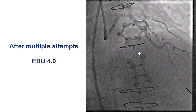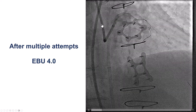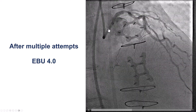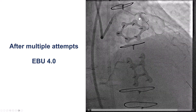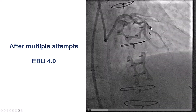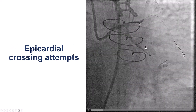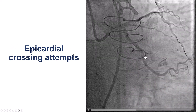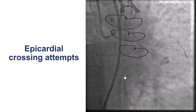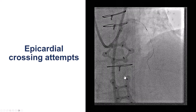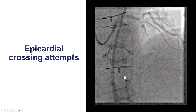After multiple attempts on the septals, we decided to try the epicardials, but it did not work. We then made the critical turning point in the case: we changed to an EBU 4.0 guide, which provided much better support. We now tried a Caravan microcatheter going through the epicardials, but unfortunately that was not successful either — we could not enter into the epicardials from the circumflex. After multiple attempts, we decided to go back to antegrade.